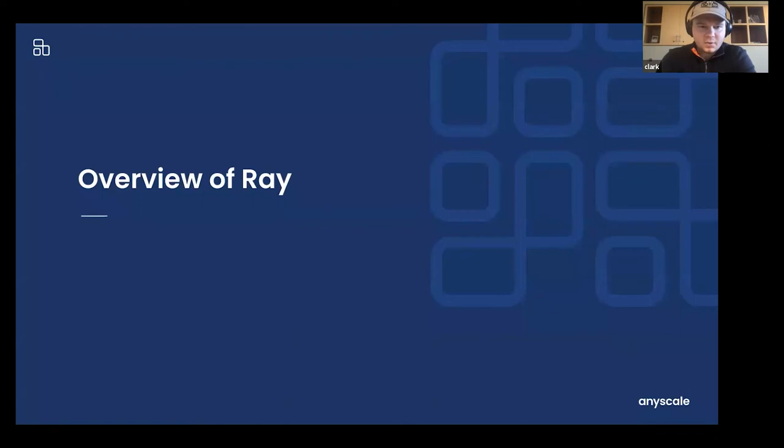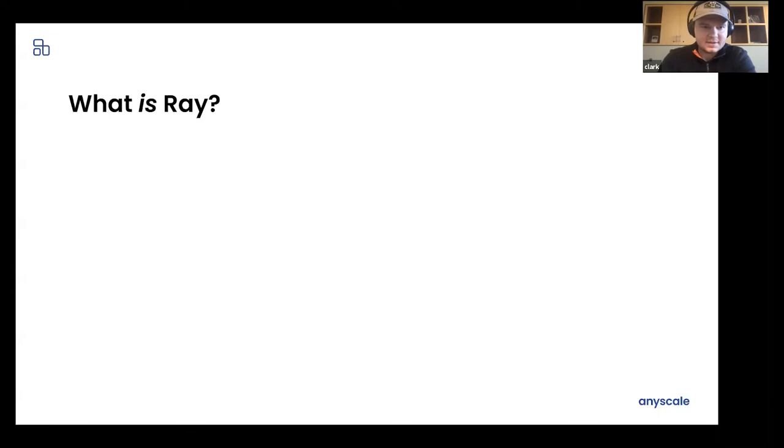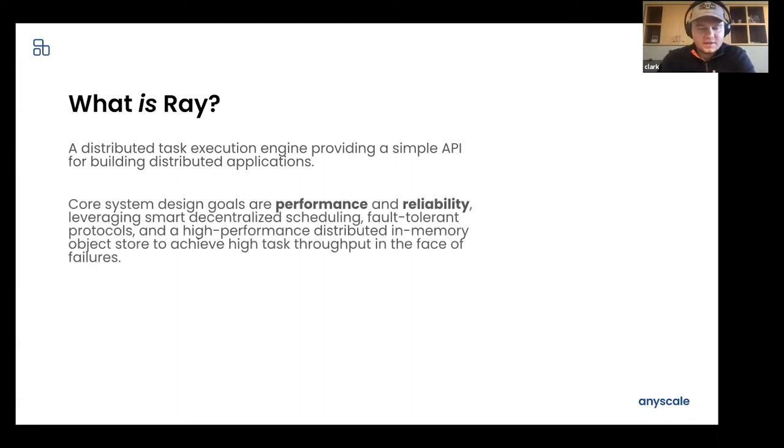So I haven't talked too much about what Ray actually is. I've just been talking about it as a cluster and a way to execute tasks. To dig into a little bit more detail on what exactly Ray is, in the abstract it's a task execution engine that is aiming to provide a very simple API for building distributed applications. And it has a couple of key focuses in its system design, and those are performance and reliability.